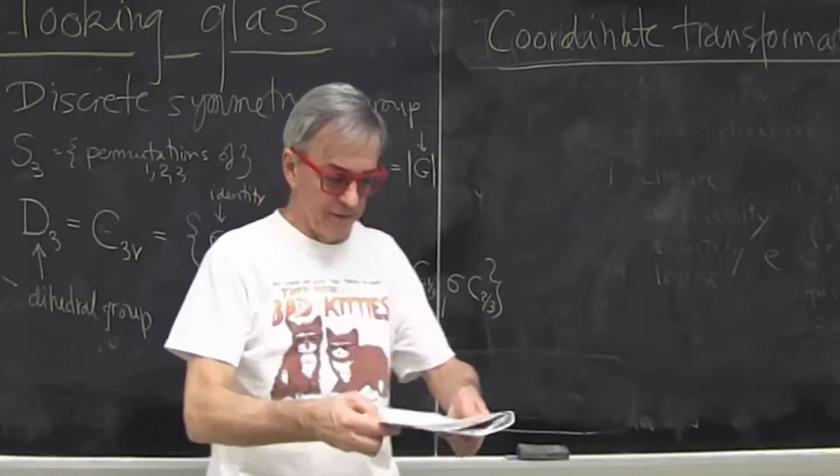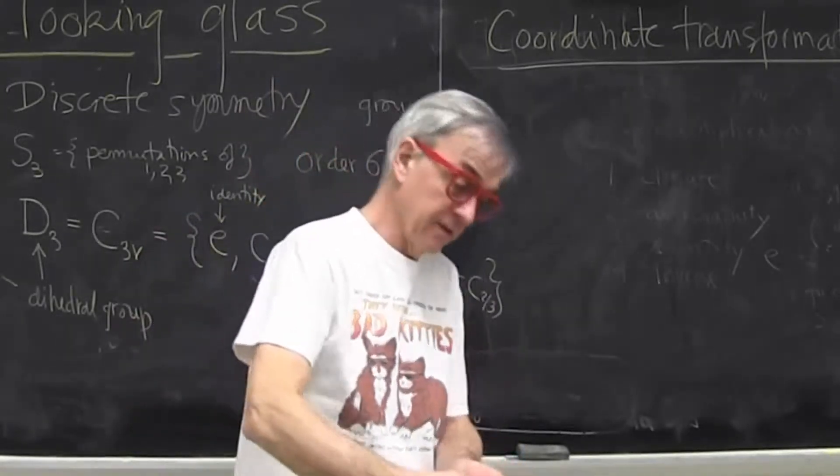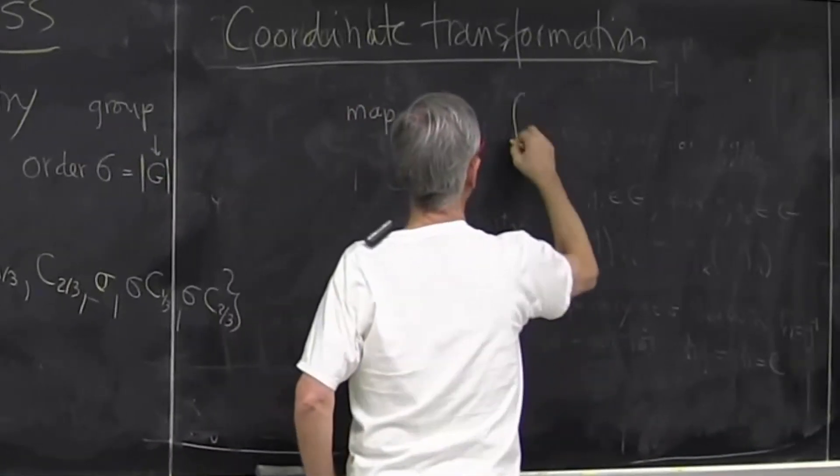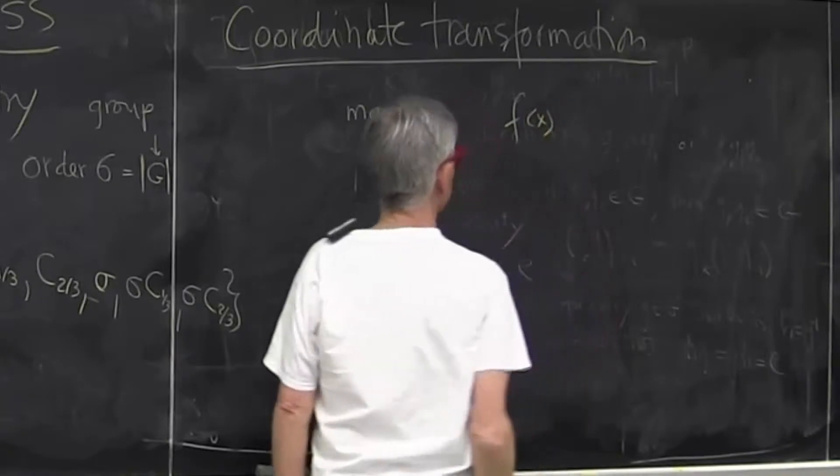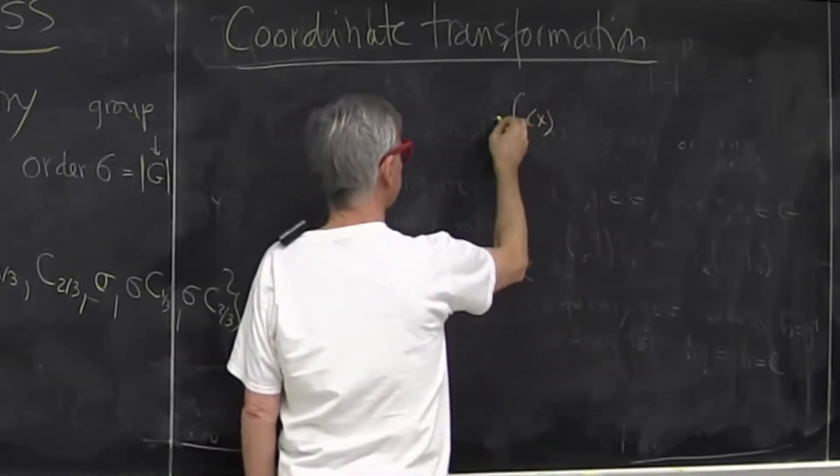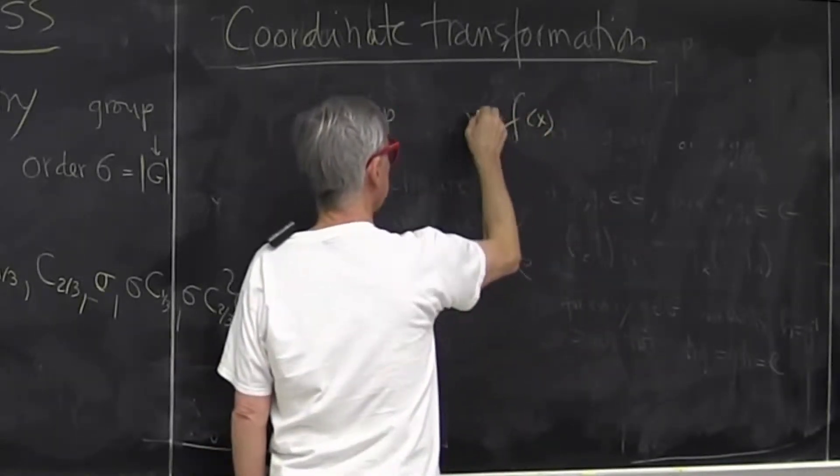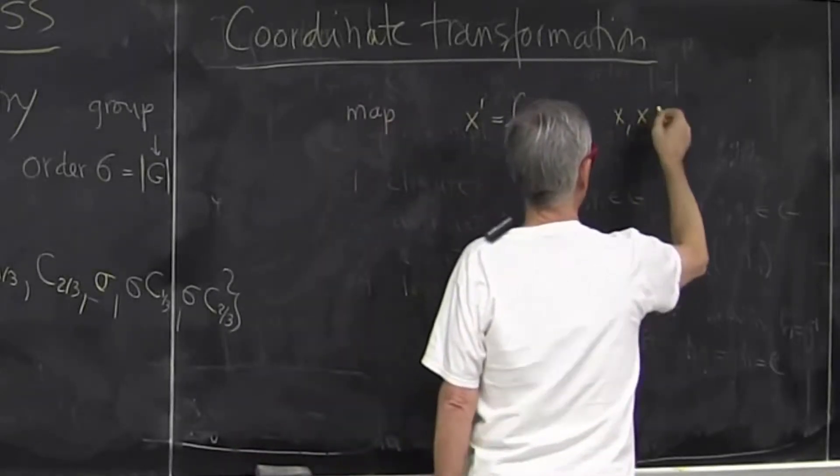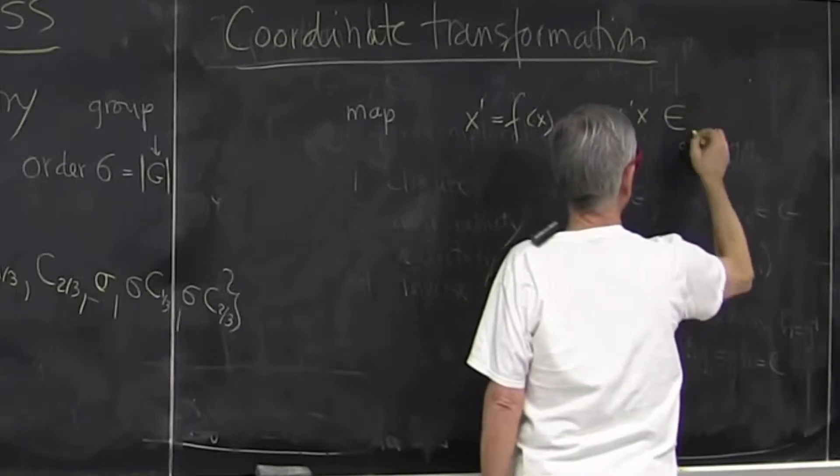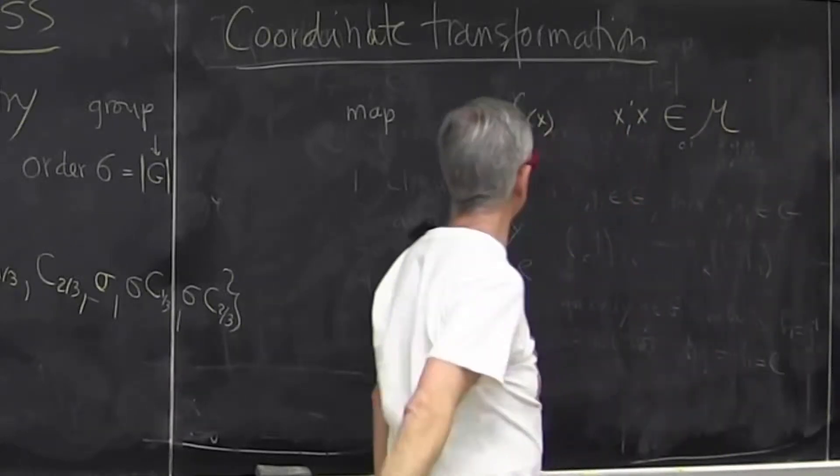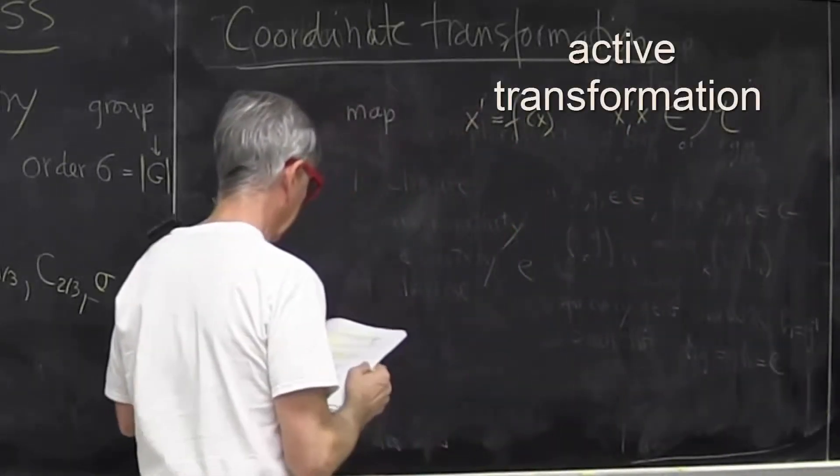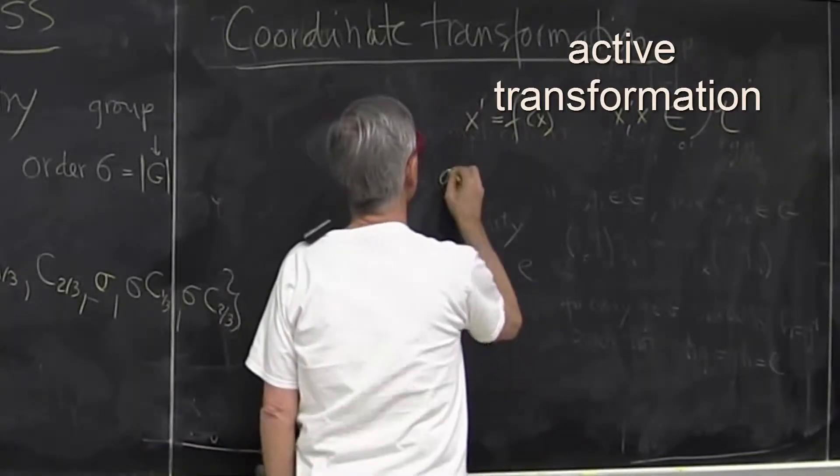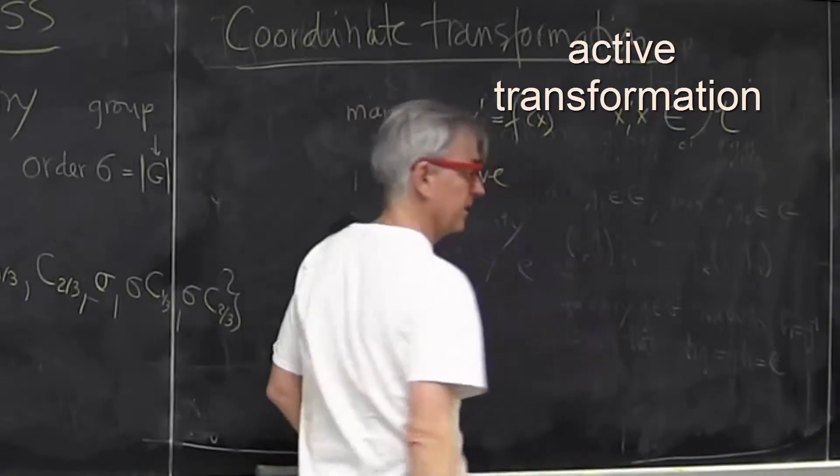So if I have a mapping that maps point x into another point which I denote x prime equals f of x, and we remain within the manifold or state space. The active transformation is a transformation of taking a point in the state space and moving it to some other point.